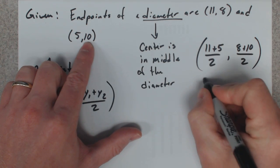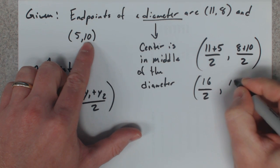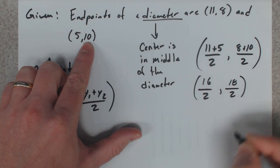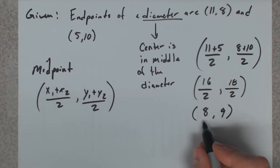So 11 and 5 makes 16, and 8 plus 10 makes 18. And if we divide both those by 2, we get (8,9). That is the center, because that is the midpoint of the diameter.